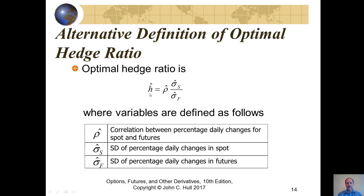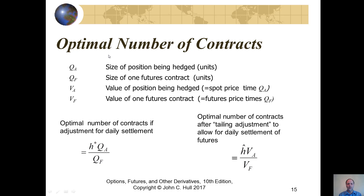An alternative definition of the optimal hedge ratio is H-hat, which equals rho-hat times (standard deviation of S-hat divided by standard deviation of F-hat). The difference is that the correlation coefficient here is between the percentage daily changes for the spot and futures, whereas earlier it was dollar daily changes. Similarly, the standard deviations are now of percent daily changes rather than dollar changes.